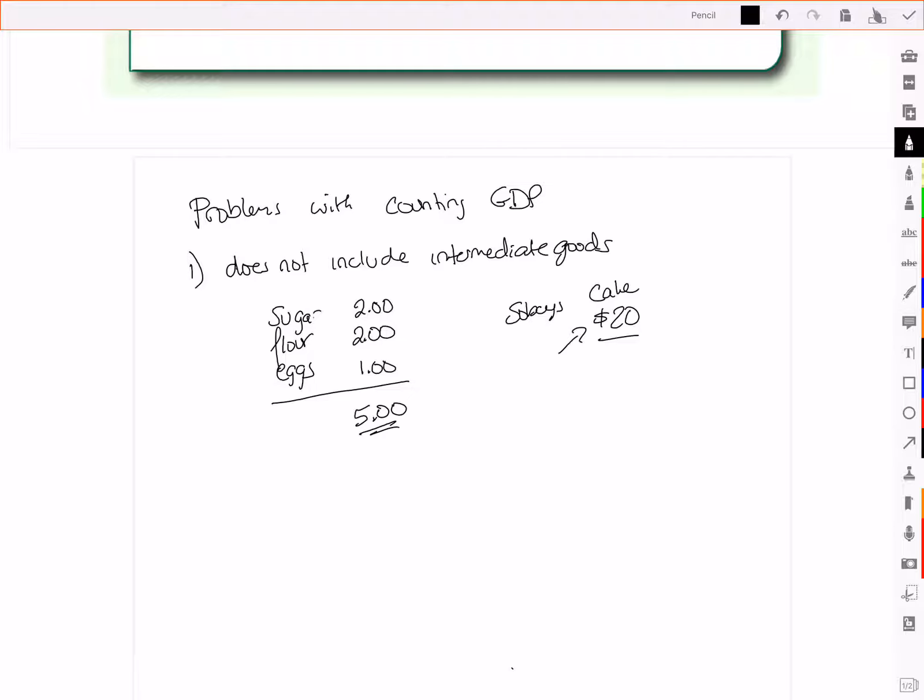So if we count both the five dollars for the sugar, flour, and eggs, and the 20 bucks for the cake, we've just counted the sugar, flour, and eggs twice. Because they're inside that 20 bucks.